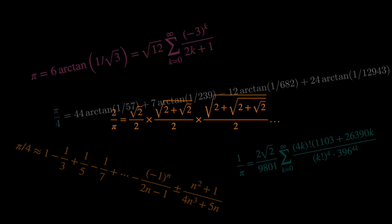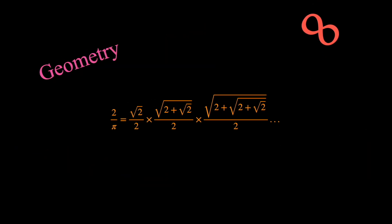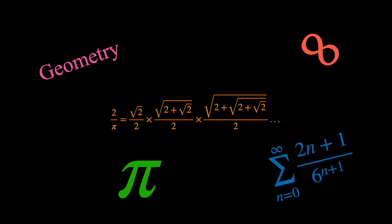Viette's formula is still a milestone in the history of mathematics, showcasing early ingenuity in connecting geometry, infinite process, and the precise calculation of pi. It sets the stage for further exploration of infinite series and products in the centuries to come.